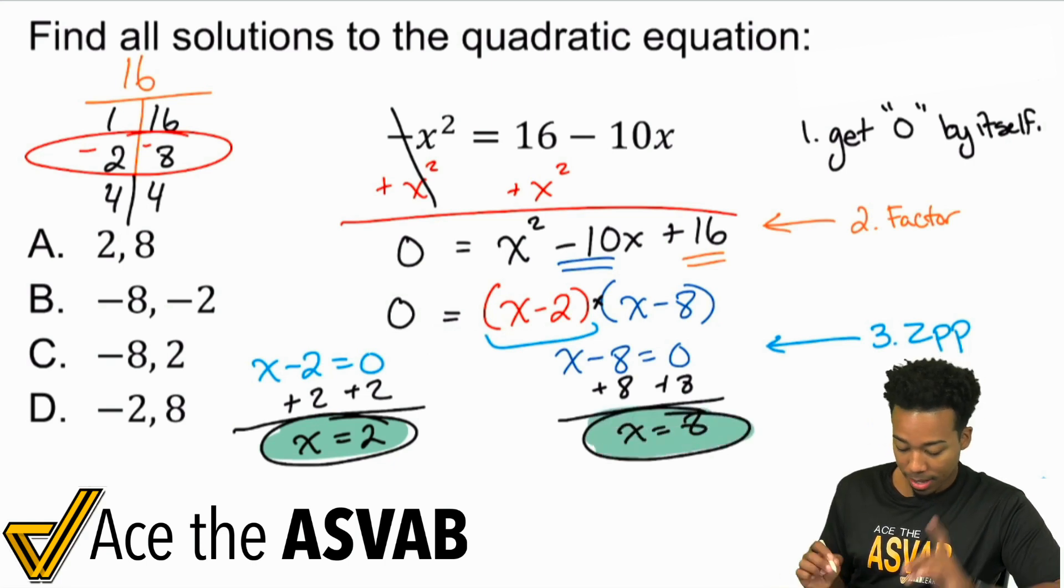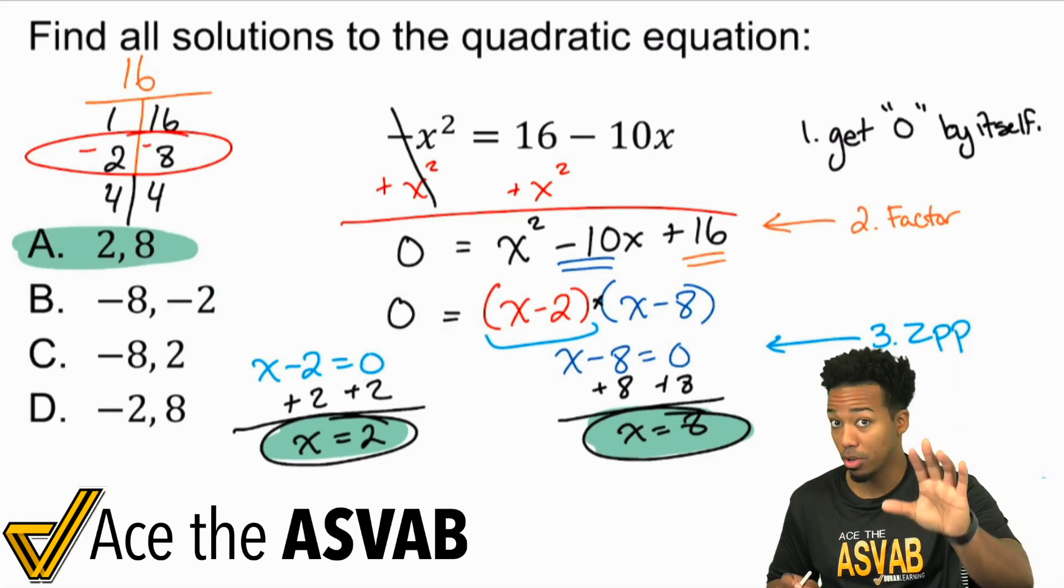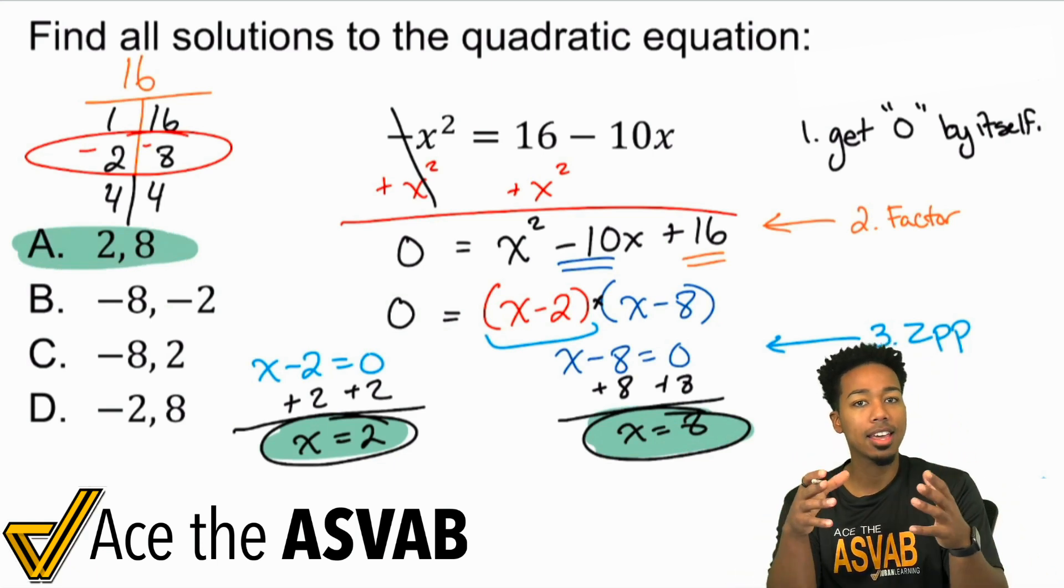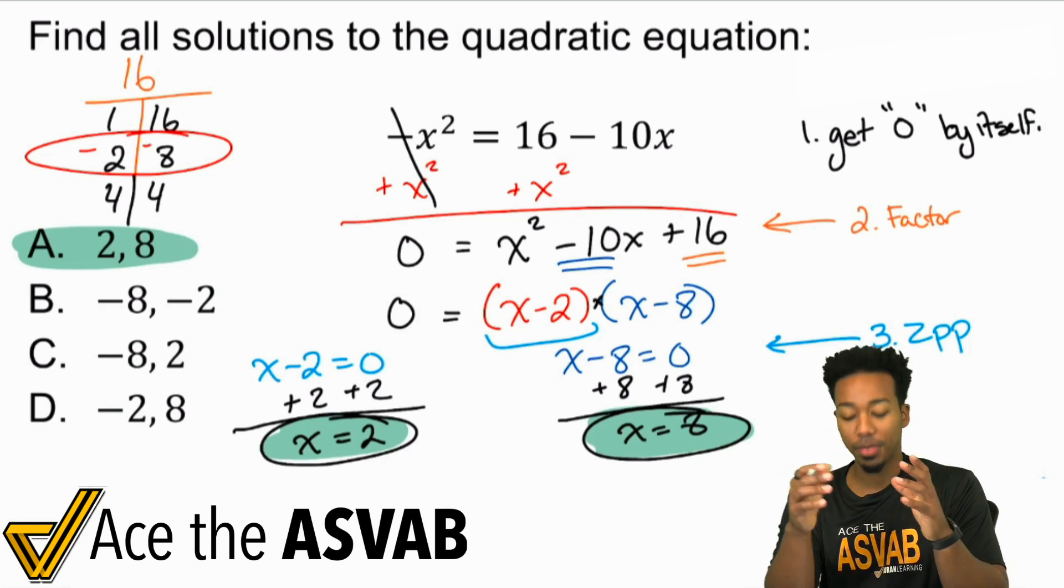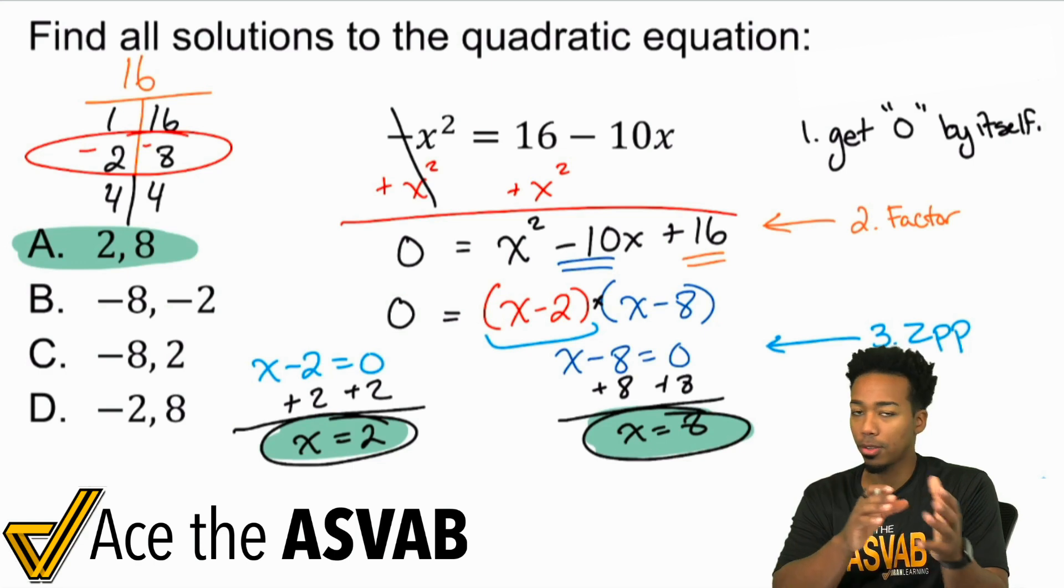And that's why the answer is going to be 2 comma 8. Now before you go, at the end of the day, what we're trying to do is get better at this. So this is a semi-complicated problem, absolutely, but we need to make sure we know how to do these if we want to keep elevating our game and guarantee that we get those higher scores.